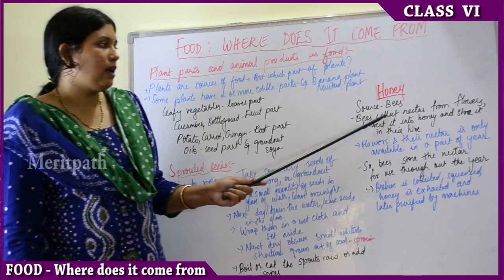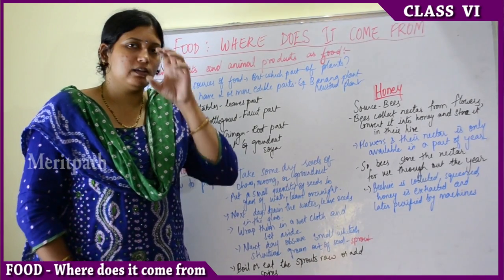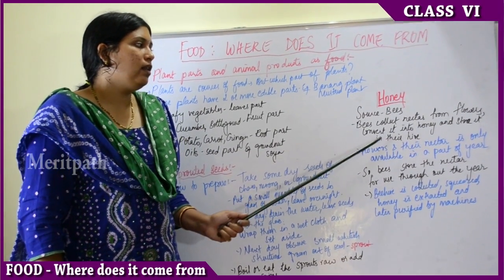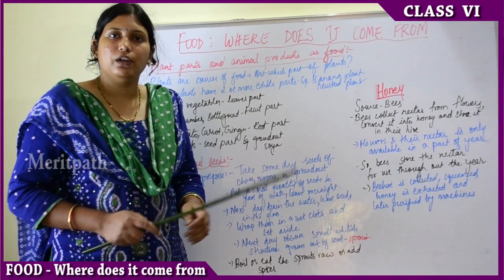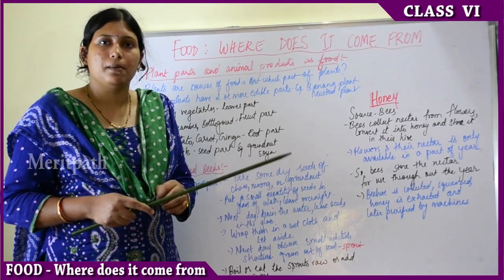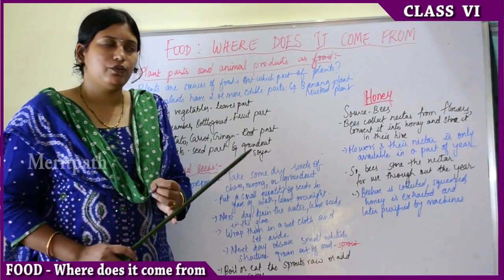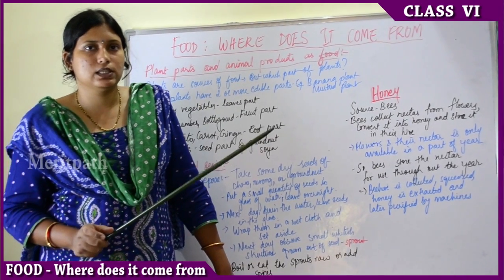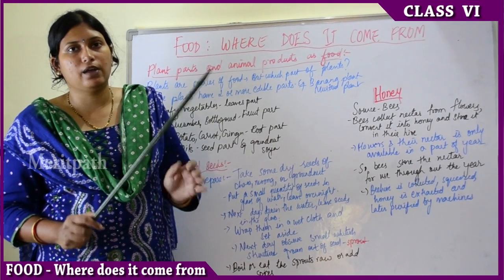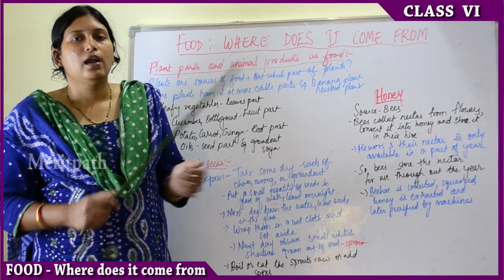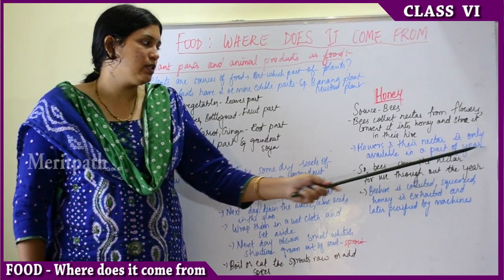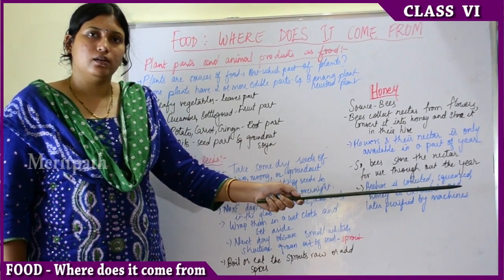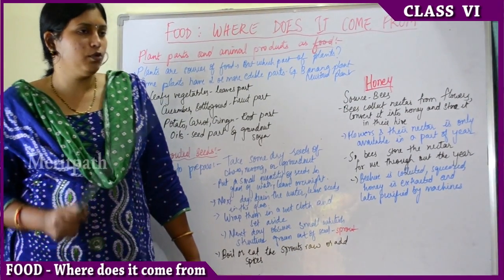Honeybees collect nectar from flowers. When they collect it from the flowers it is known as nectar; they then convert it into honey and store it in the hive, which has small rectangular-shaped chambers. Flowers are not available all through the year — every flower grows in a particular season. So during the months when flowers are available, bees work hard day and night to collect and store nectar for use all through the year.